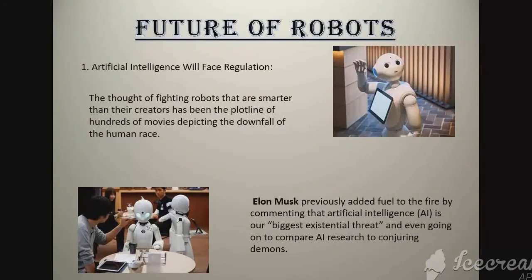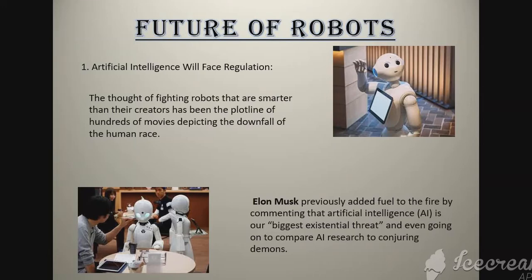The future of robots. First, artificial intelligence will face regulation. The thought of fighting robots that are smarter than their creators has been the plotline of hundreds of movies depicting the downfall of the human race — for example, the movie Terminator: The Dark Fate. Elon Musk previously added fuel to the fire by commenting that artificial intelligence, AI, is our biggest existential threat, and even going on to compare AI research to summoning demons.